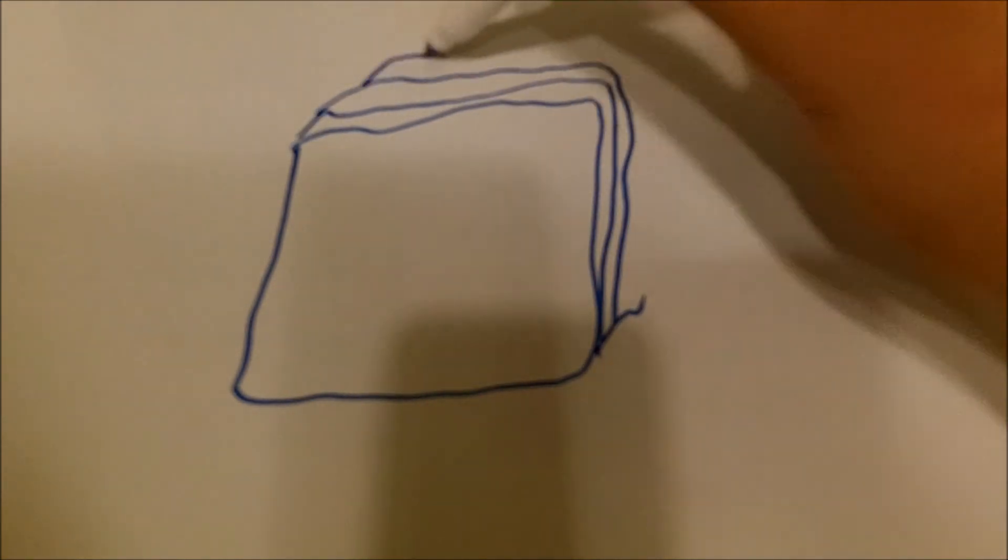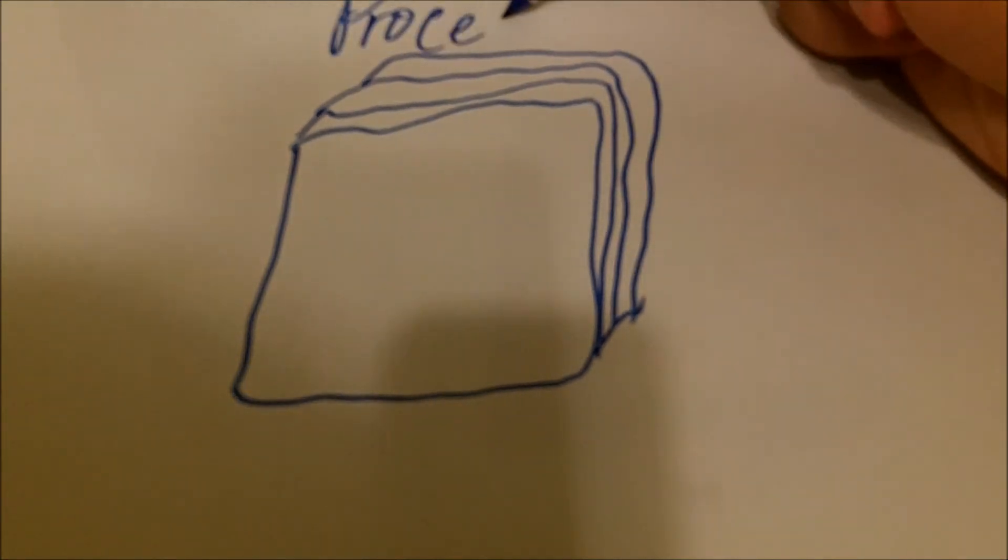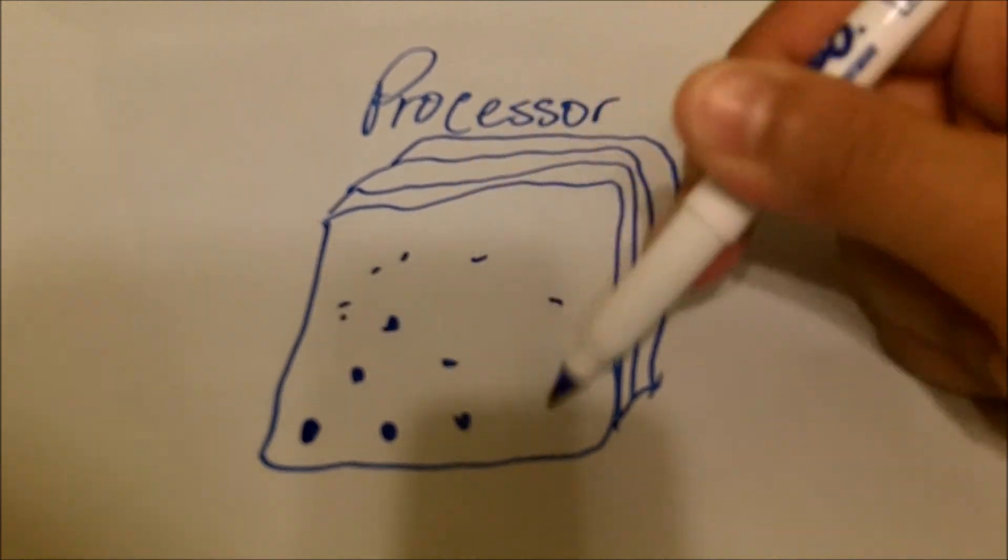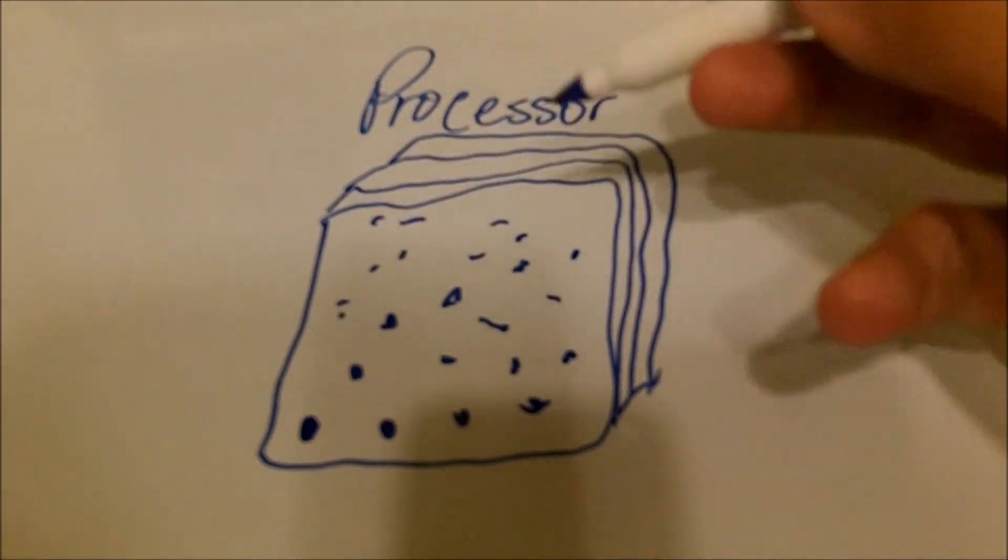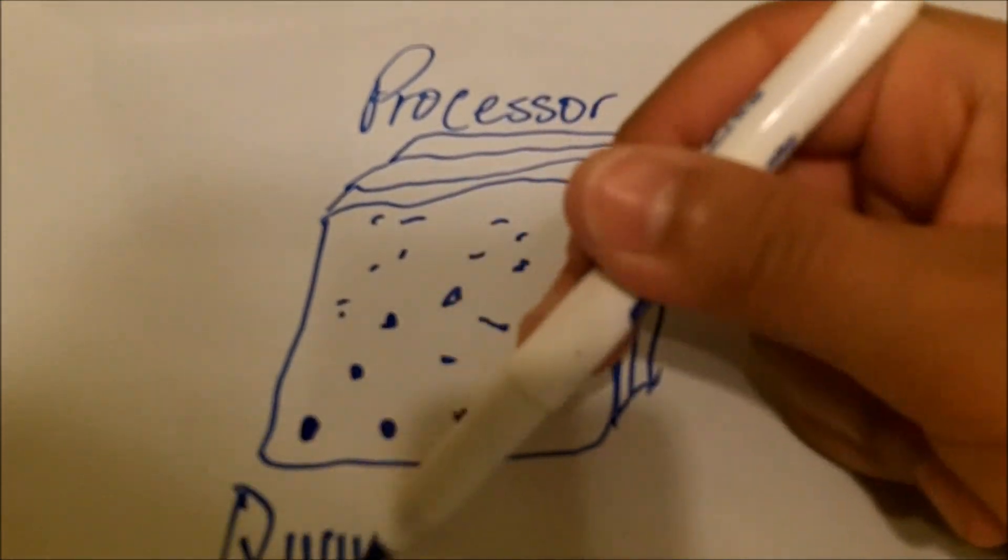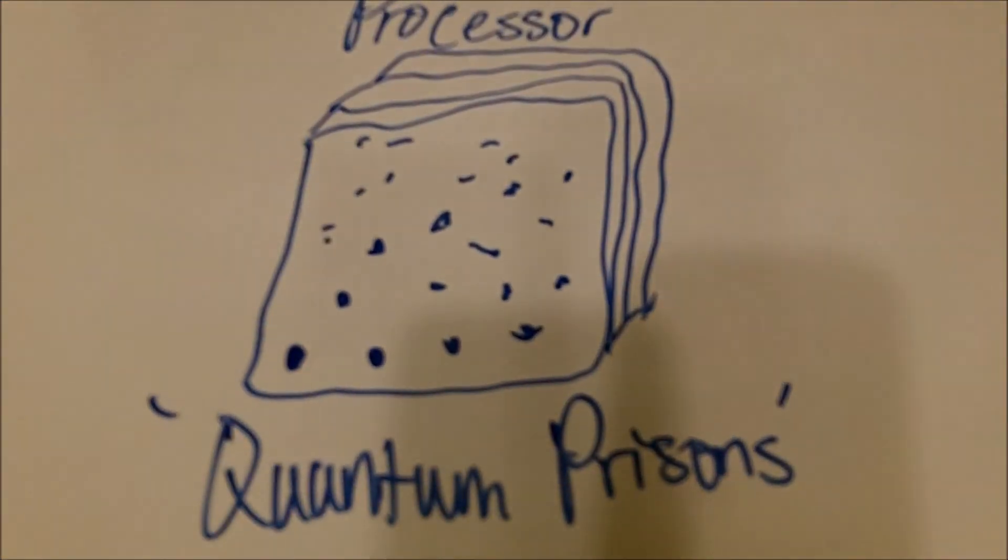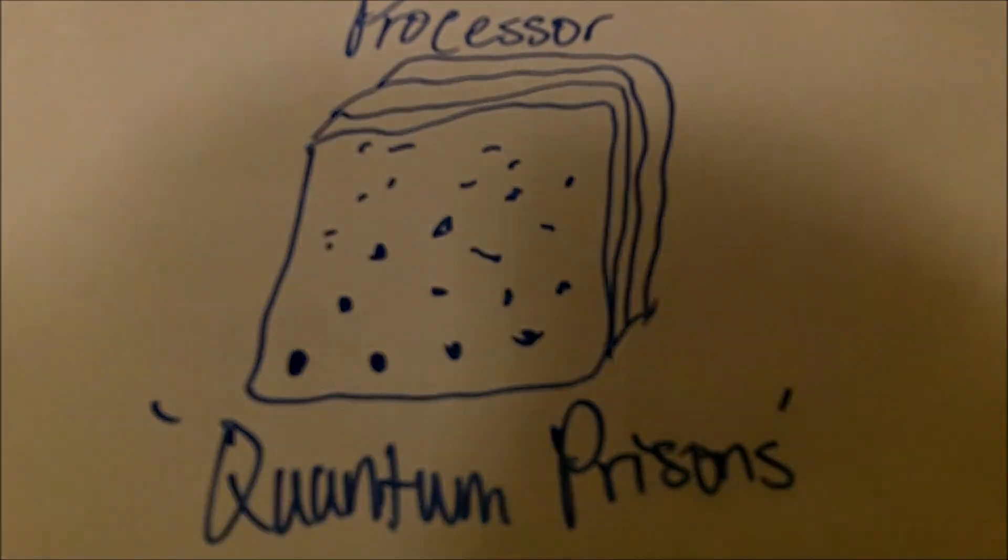Now the very device that you're viewing this video on, whether it would be a computer, a smartphone, a tablet, has a processor in it. And these processors act as sort of quantum prisons. Now these quantum prisons, or processors, are able to effectively capture electrons and convert them into energy that's usable.